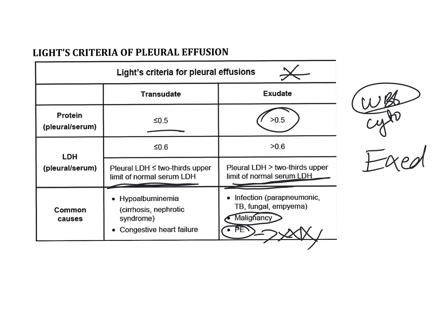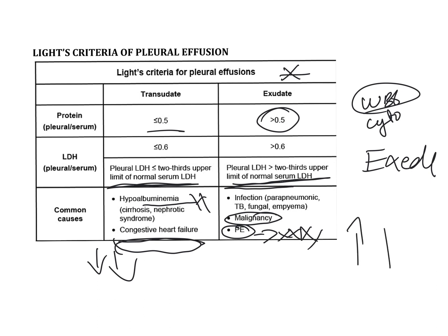Examples of transudate include hypoalbuminemia, which causes an osmotic difference leading to fluid in the pleural space, and congestive heart failure, where backflow pressure increases fluid in the pleural space. In transudate, protein and LDH will be less. In exudate, protein and LDH will be increased.